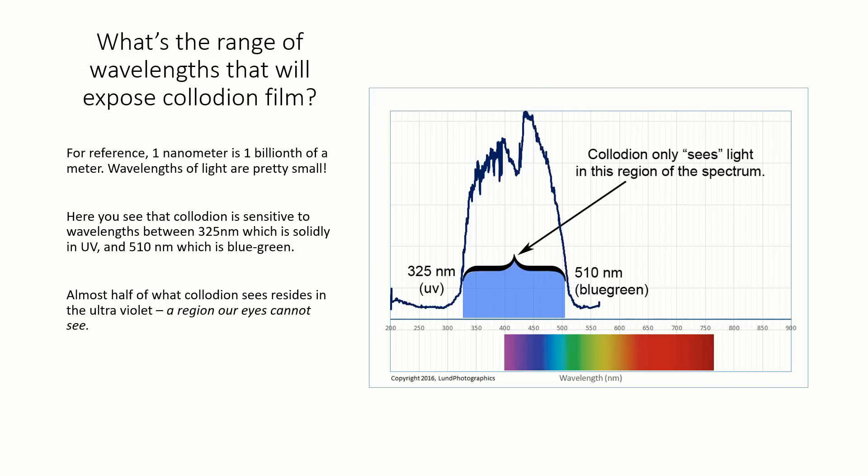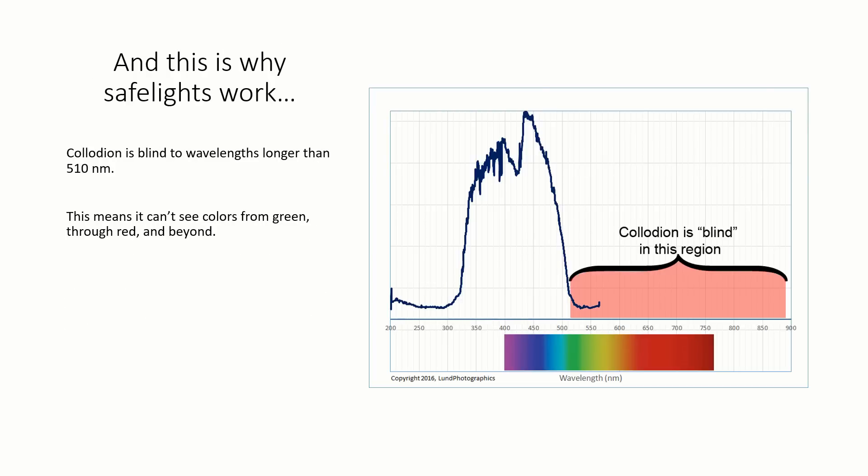About half of what collodion sees lies in the ultraviolet, which is a region of the spectrum that our eyes can't see. On the other hand, collodion is blind to wavelengths longer than 510 nanometers. That's why you can use a red safe light in the darkroom without exposing your film.